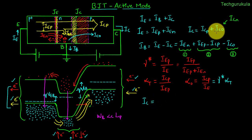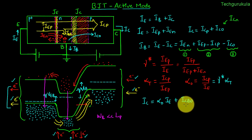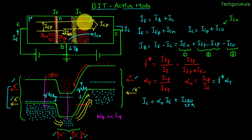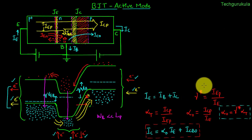I_CB0 represents the current flowing between collector and base when the emitter is open. When I_E is zero, all components I_CP, I_BB, and others are zero, and the only current flowing between collector and base terminals is I_CB0, the open-emitter leakage current. All the important relationships discussed are summarized here.